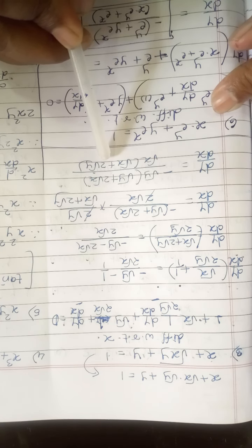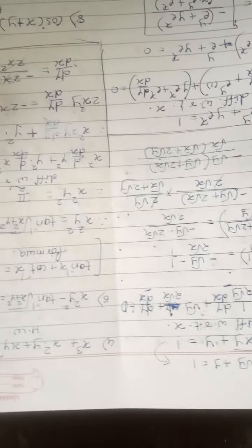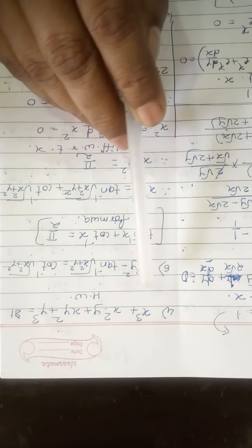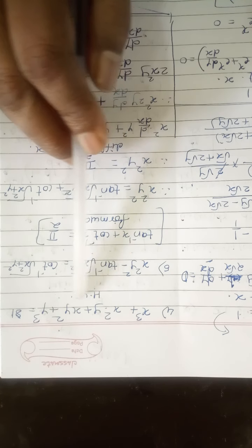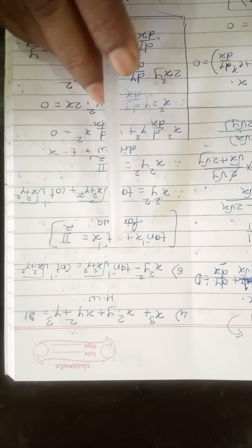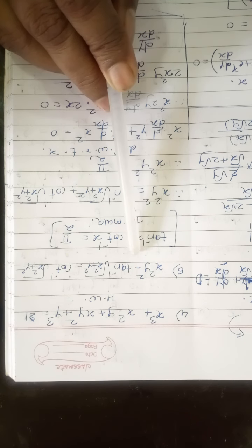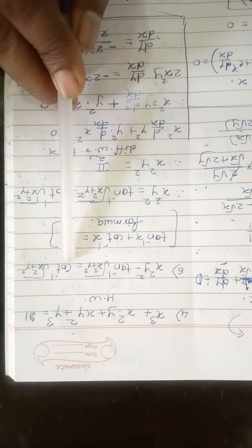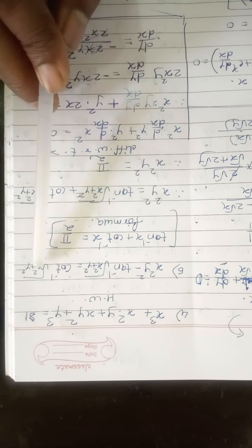Question 4, which is similar to example 3, is given as homework: x³ + x²y + xy² + y³ = 81. Example 5 is somewhat different, so I will solve it. The example is: x²y² − tan⁻¹(√(x²+y²)) = cot⁻¹(√(x²+y²)). Notice the quantity inside the root is the same on both sides.